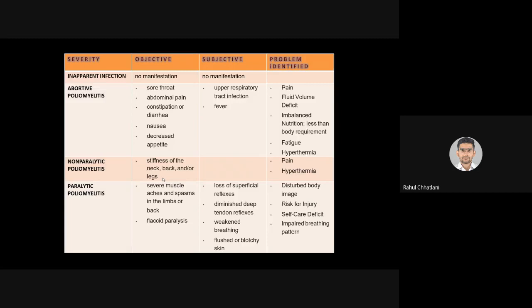Identified nursing problems include: disturbed body image — the patient may show unilateral neglect of the affected side; risk for injury — if the patient denies paralysis and attempts to walk with a paralyzed limb, there is increased fall risk; self-care deficit — the patient cannot or will not care for the affected side; and impaired breathing pattern, since respiratory and accessory muscles may be affected by flaccid paralysis.